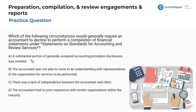Option A: a substantial portion of generally accepted accounting principles disclosures was omitted. Remember, we're at the engagement acceptance stage. Whereas if a substantial portion of GAAP principles and disclosures were omitted, that's going to come up later on in the engagement. So I would eliminate letter A because that's just not where we are in the engagement process.